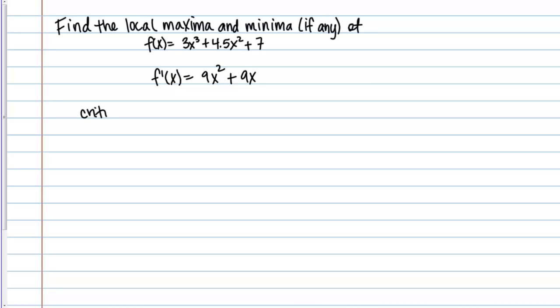Let's find the critical points. Remember the critical points are the points where the derivative either equals 0 or does not exist. First, let's think about if there's any points where the derivative does not exist. Our derivative in this case is a quadratic, 9x² + 9x. That is defined for any x values. There are no points where the derivative does not exist. We can move on to finding places where the derivative equals 0. To do that, I need to solve the equation 0 = 9x² + 9x.